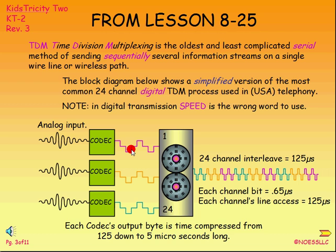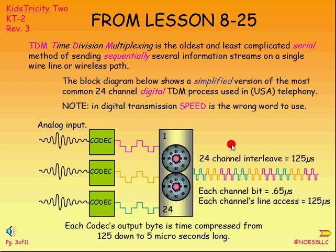Each one of those samples is turned into an 8-bit digital code representing that sample — I'll show this in more detail in the next slide. So I've created an 8-bit sample every 125 microseconds. I take that 8-bit sample and this is where the time division multiplexing sequencer comes into play. It takes the 8-bit sample and puts it out on this shared facility. Here are the 8 bits from the first channel, then I take the next codec 8-bit sample and stick it on the line, then the next one, and so on.